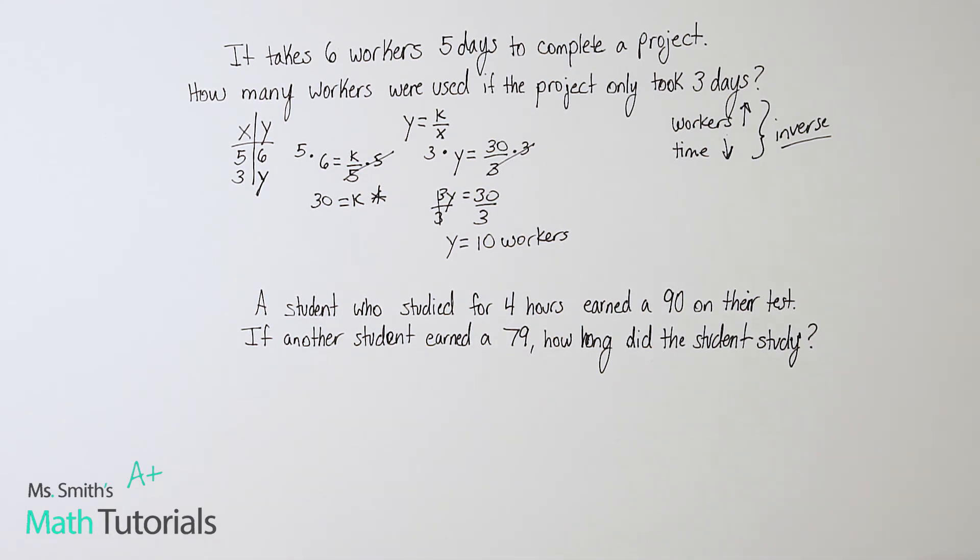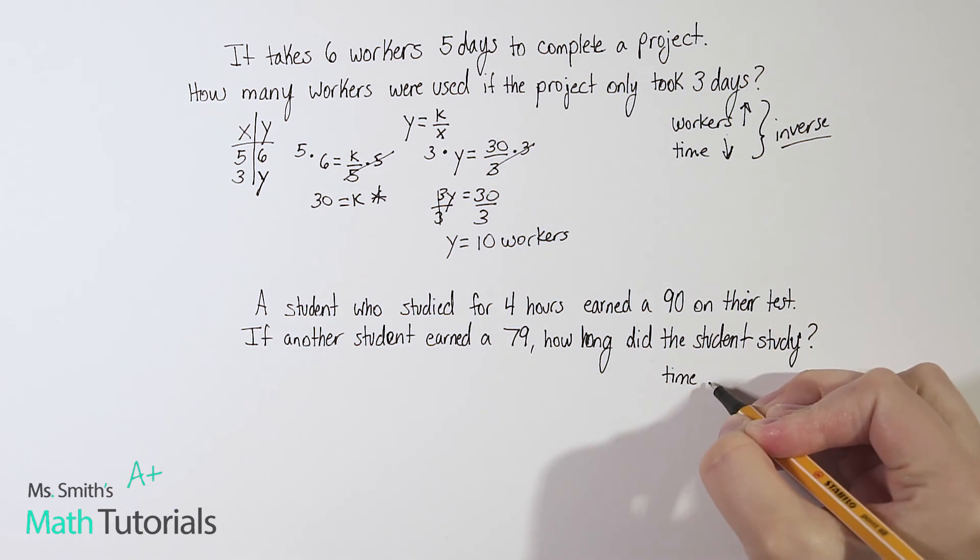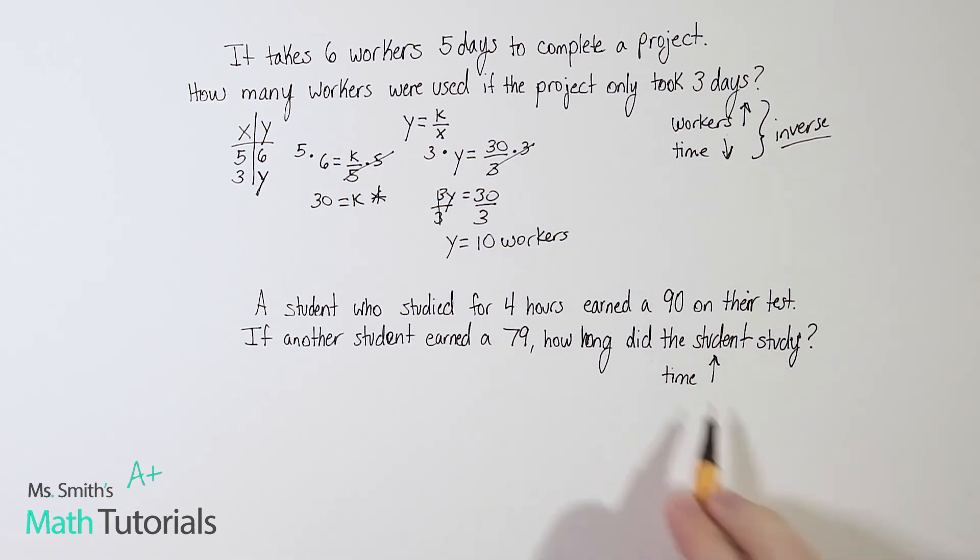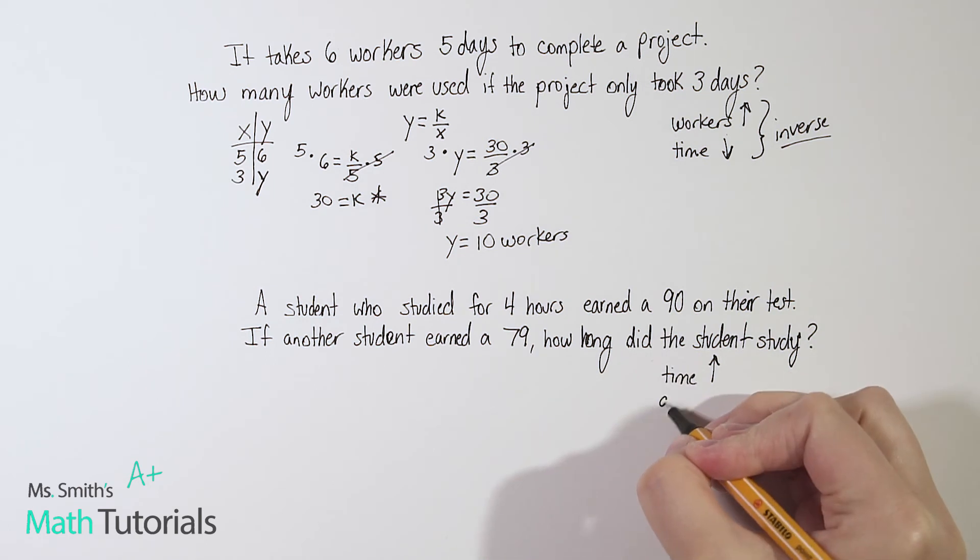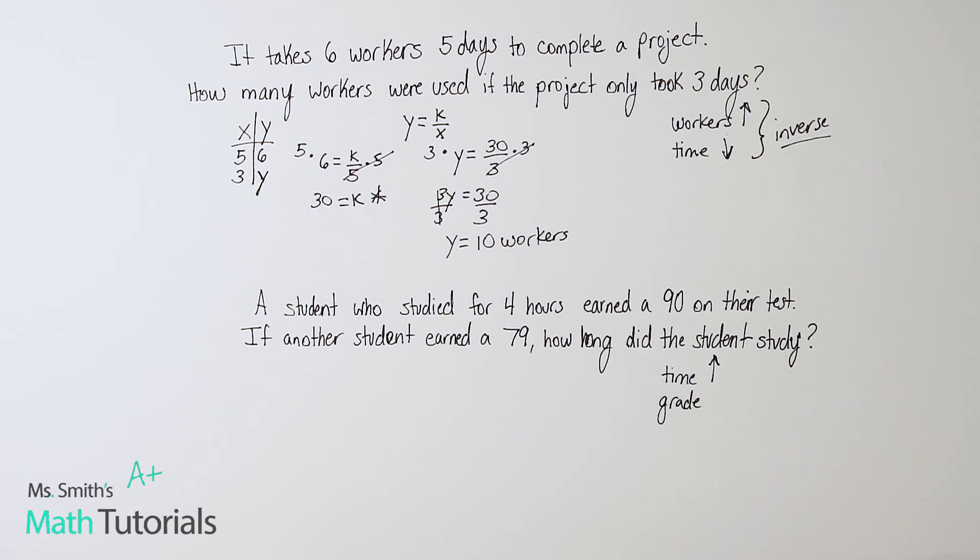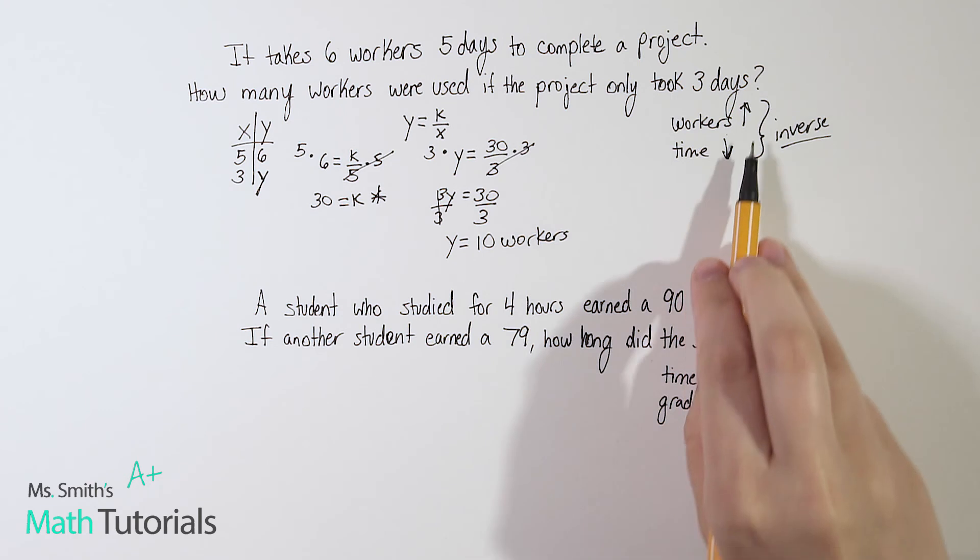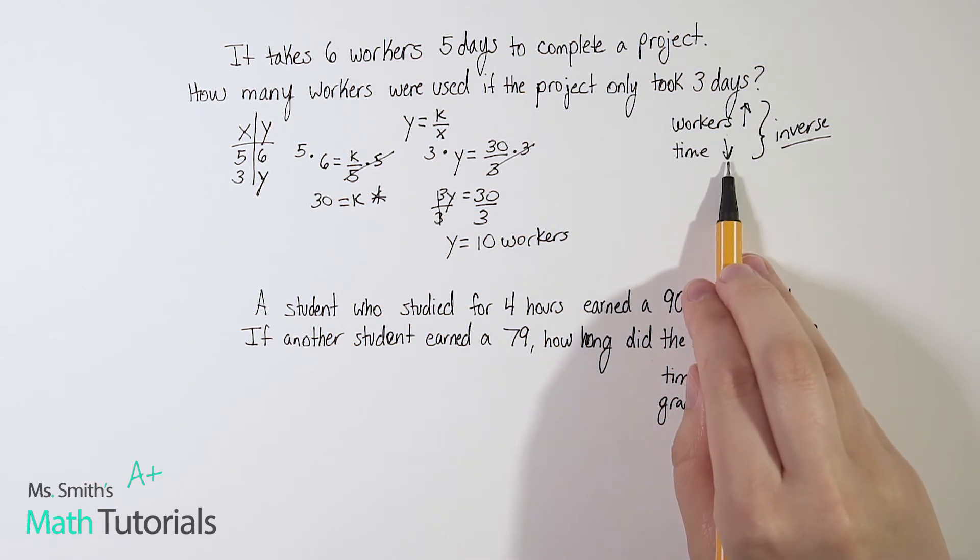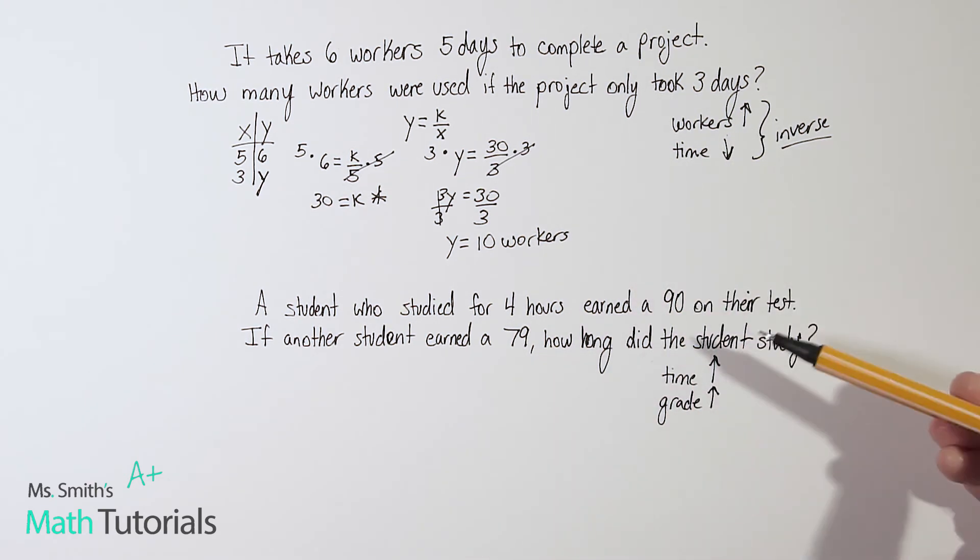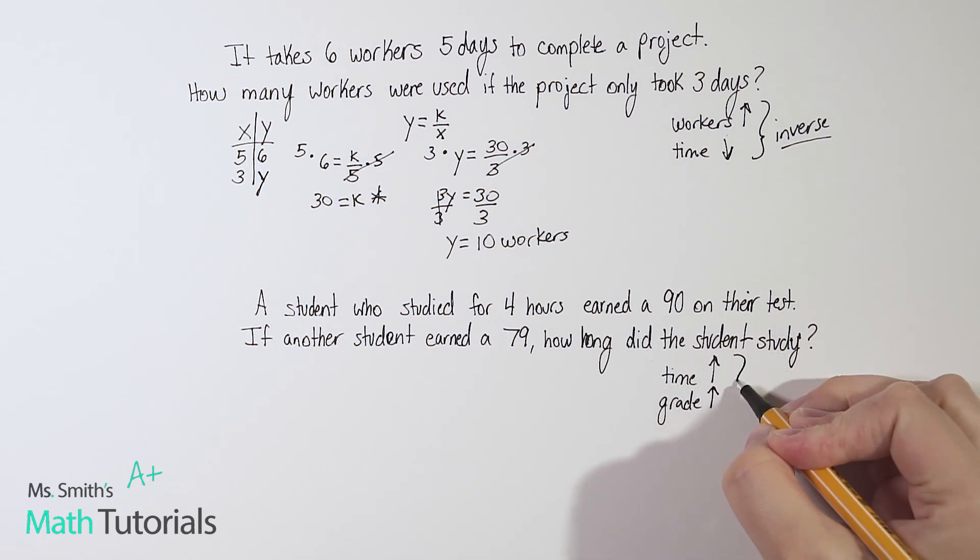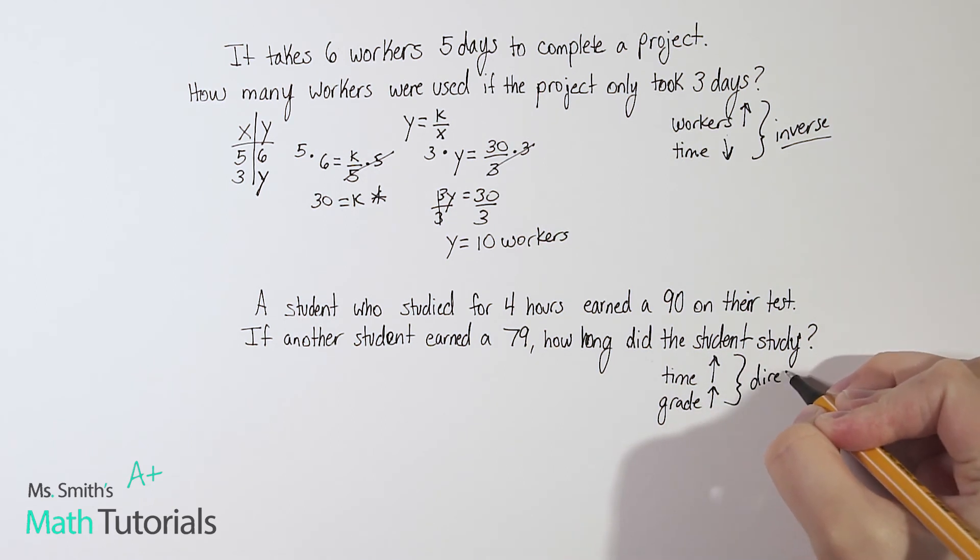Let's think about this. Do I want to use that direct or inverse formula? So for this one, as a student who studies, so as their time studying goes up, what happens to their grade? Well, we know using logic that the more you study in theory, the higher your grade is going to be. So notice how this time we had like difference here as one went up, the other went down, and we use the inverse. Well, notice in this case, they're both going up. So because they are going in the same direction, that's called direct variation.